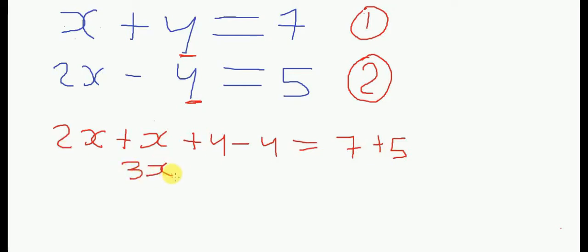2X plus X equals 3X. Y cancels Y there. 7 plus 5 is 12.